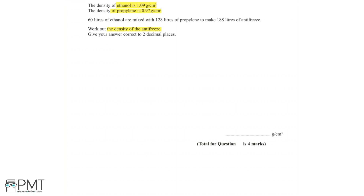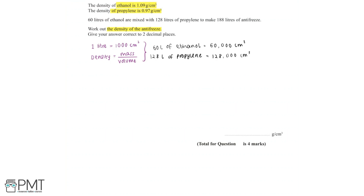We have quite a few different units here, so we need to make sure our units are the same throughout the question. For density, we're using grams per centimetres cubed, but the volumes are given in litres. There are two things we need to know: first, one litre is equal to 1000 centimetres cubed, and second, density equals mass divided by volume. So 60 litres of ethanol is equivalent to 60,000 centimetres cubed, and 128 litres of propylene is equivalent to 128,000 centimetres cubed.